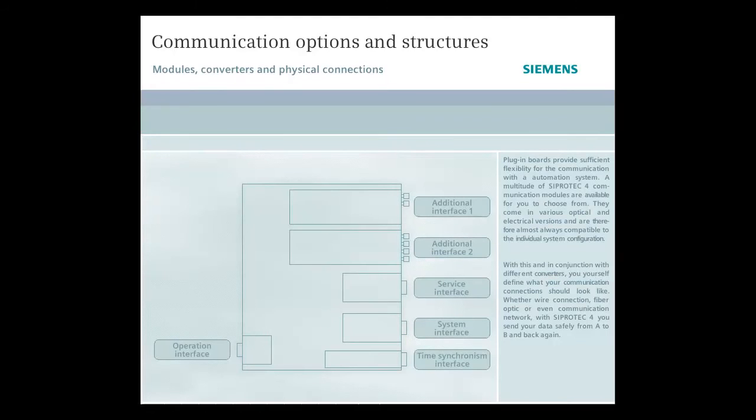Plug-in boards provide sufficient flexibility for communication with an automation system. A multitude of C-Protect 4 communication modules are available for you to choose from. They come in various optical and electrical versions, and are therefore almost always compatible to the individual system configuration.